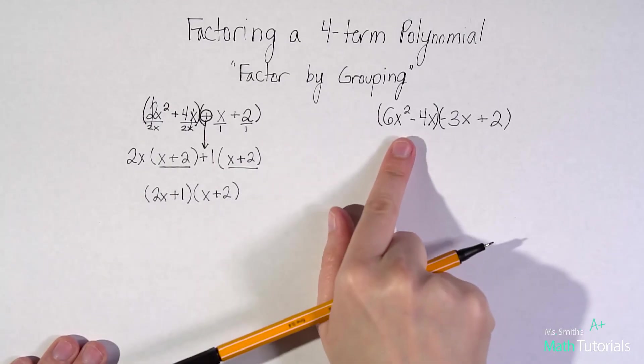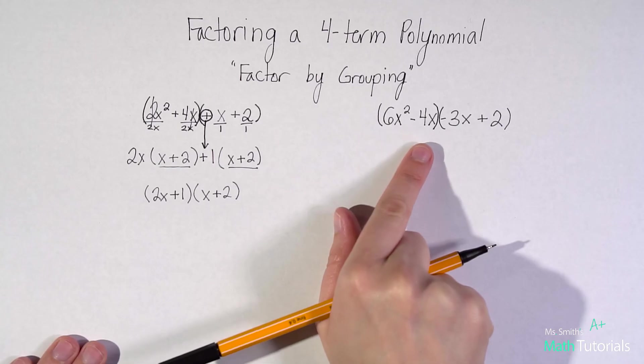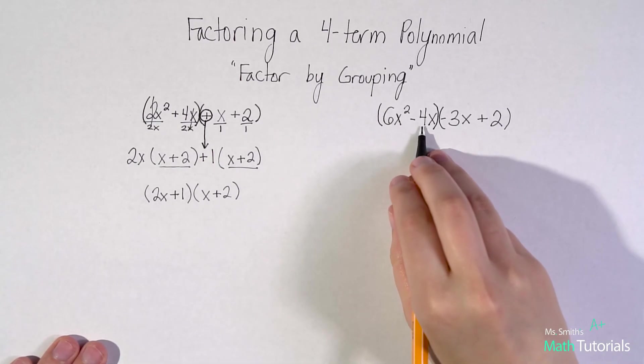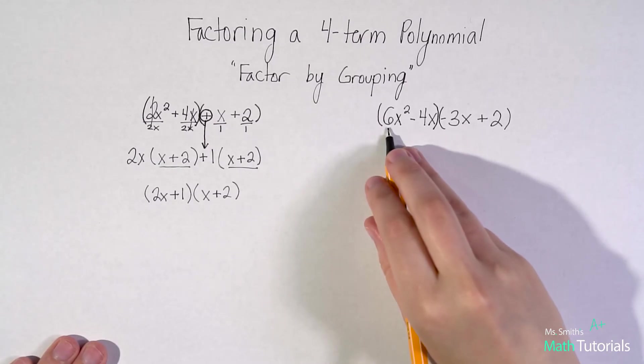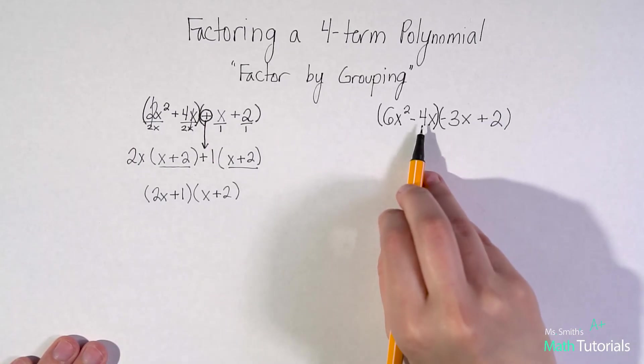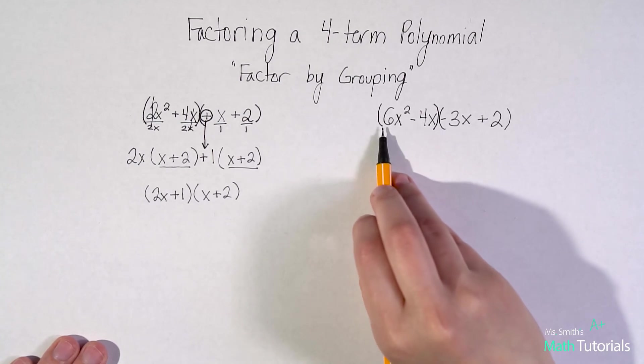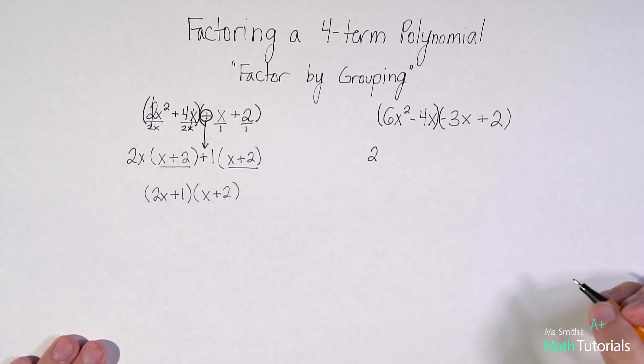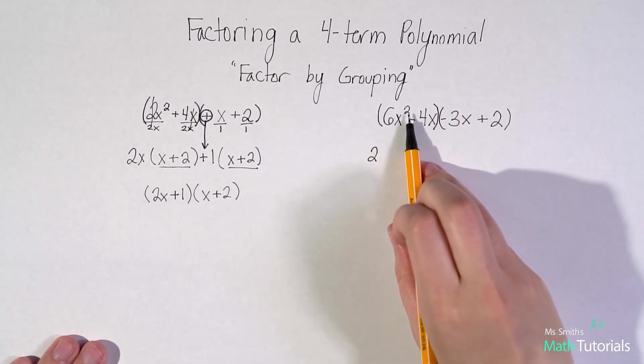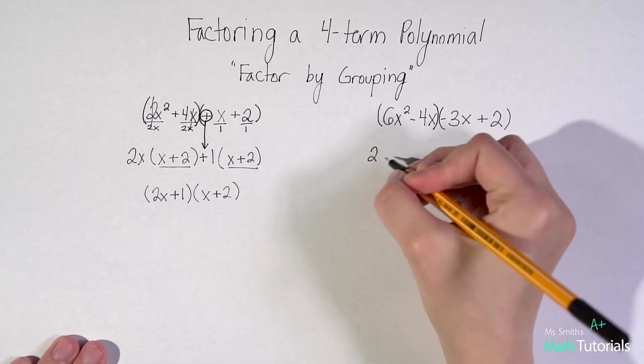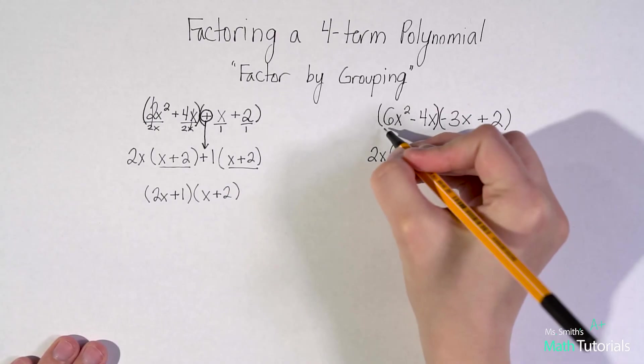Let's find the GCF of the first group. So 6x squared minus 4x. Well, usually start with the lower number. I know 4 goes into 4. Does 4 go into 6? Not evenly. So no. So let's do our next number down. I know the next number down from 4 would be 2. So I know 2 goes into 4. Does 2 go into 6? Yes. So I'm going to go ahead and pull out the number 2. Now I've got x squared and just one x, so the most I can pull out is just one x.